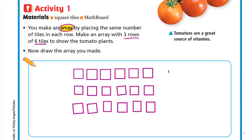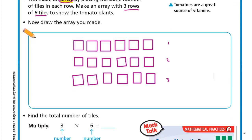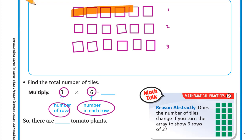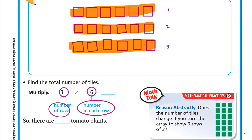The third row: one, two, three, four, five, six. So these are the three rows, each row is six tiles. To find the total number of tiles: the number of rows is three, multiplied by the number in each row, which is six. Three times six — skip counting by six: six, twelve, eighteen. So three times six equals eighteen. There are eighteen tomato plants in total.